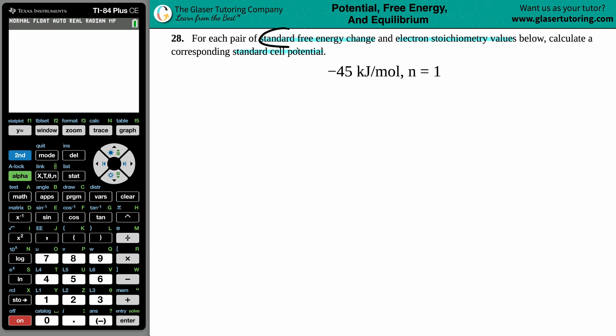One of these values has to be the standard free energy change and the other has to be the electron stoichiometry value. Let's start with the free energy change. Remember, free energy is more specifically Gibbs free energy.